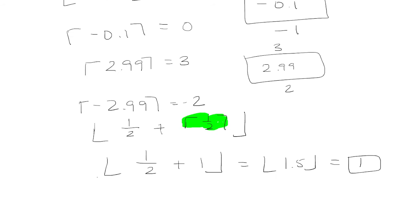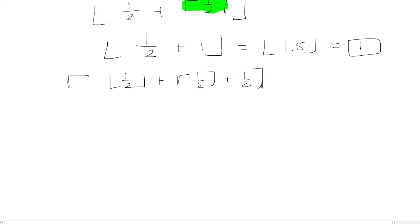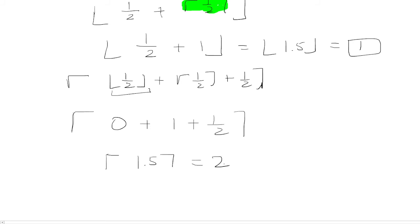Now let's introduce more functions. We have the ceiling of the floor of 1/2 plus the ceiling of 1/2 plus 1/2. The floor of 1/2 is 0 because rounding it down gives 0. If you round 1/2 up, that's 1. So this is just going to be the ceiling of 1.5, which means round it up, giving 2.